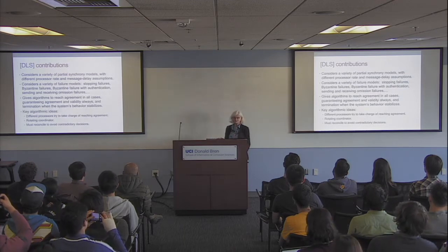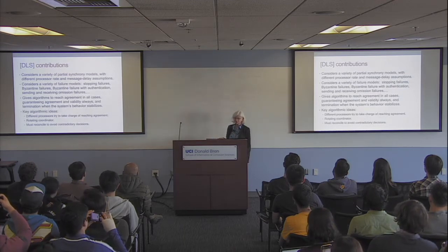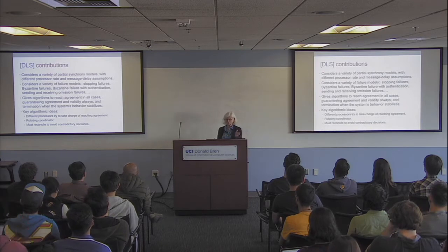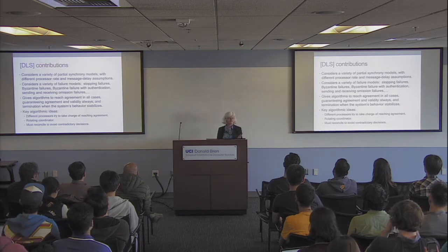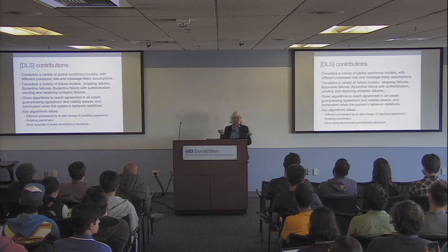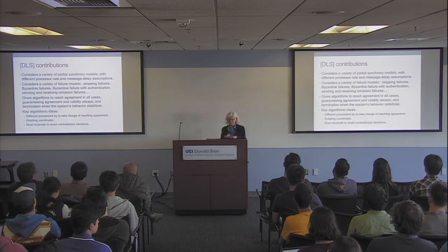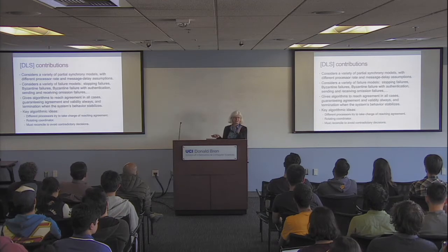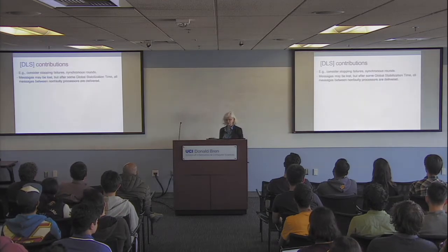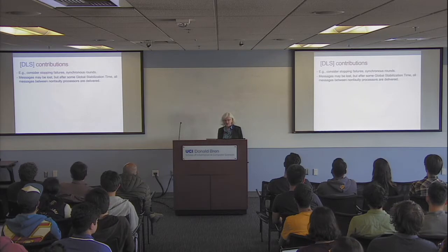Our contribution in this paper was looking at a whole lot of different models of synchrony and different failure models, and for all of these we were able to get algorithms that can reach agreement. What we're guaranteeing is you always get agreement and validity, but your termination may depend on when the system behavior stabilizes. The key ideas of the algorithm are: different processors can take charge of reaching agreement in a rotating fashion, and you need some mechanism to reconcile different decisions so they don't reach contradictory conclusions.